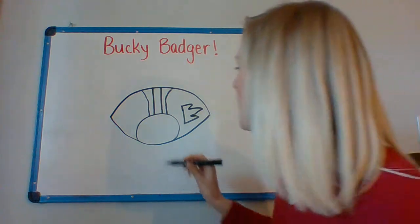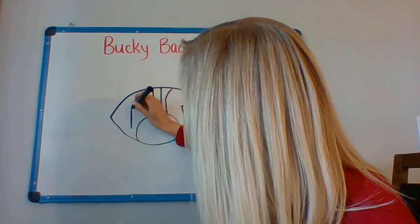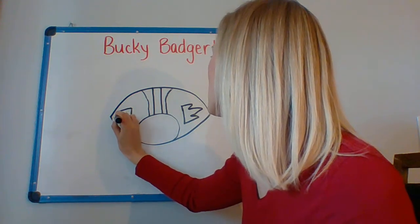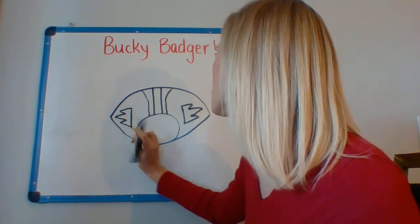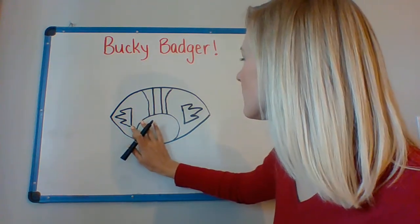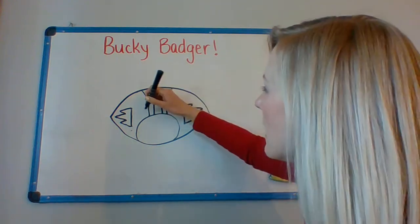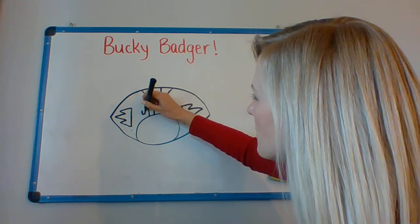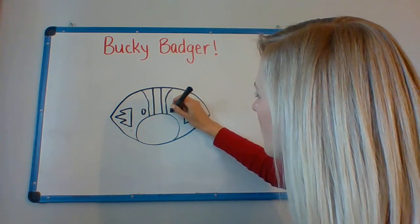I'm going to do it again on the other side. Little curved line. Short, long, short. Next, I'm going to add some eyes — just little ovals. One there and one there.